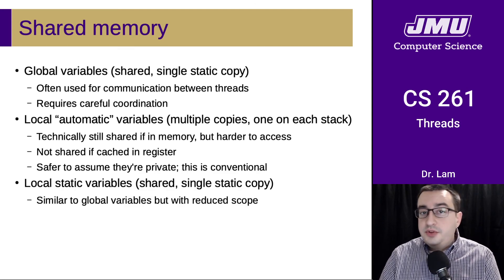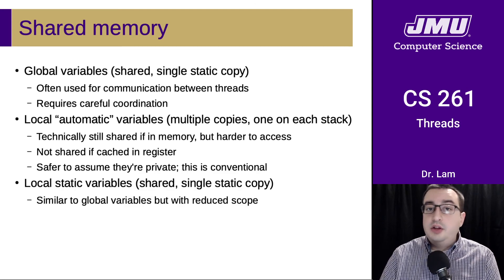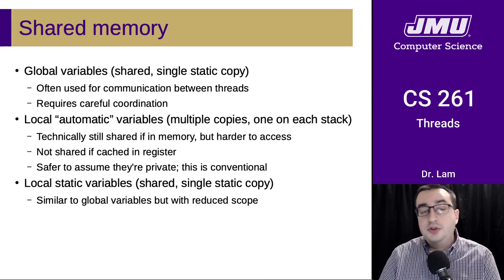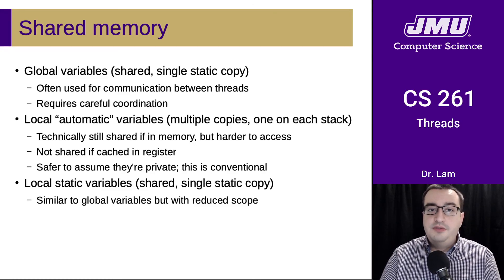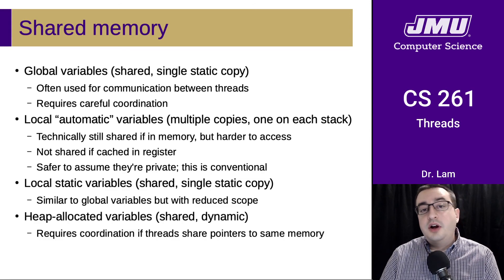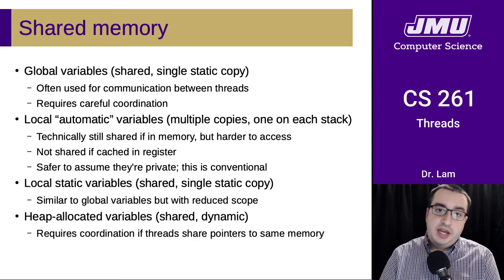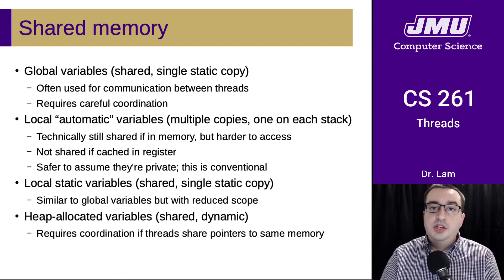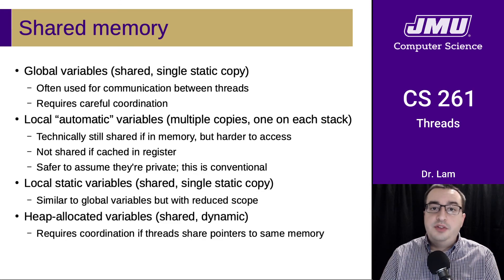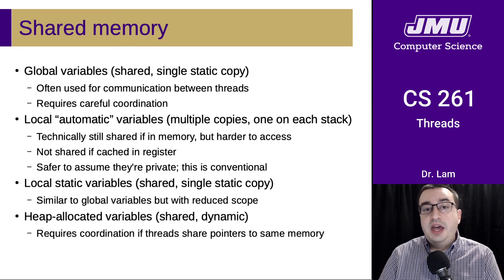There are also local static variables, which like global variables are shared across threads — similar to globals but with reduced scope. And there are heap-allocated variables: basically, if you have a pointer to a heap variable, you can access it. If multiple threads hold a pointer to the same heap-allocated variable, then multiple threads have access to that variable, and again this requires careful coordination.